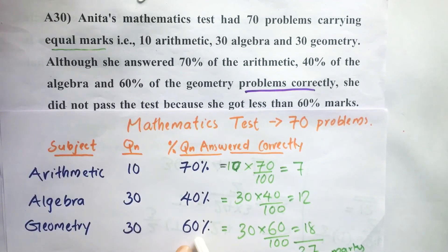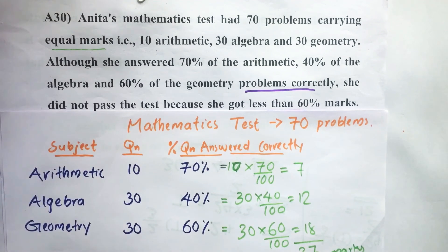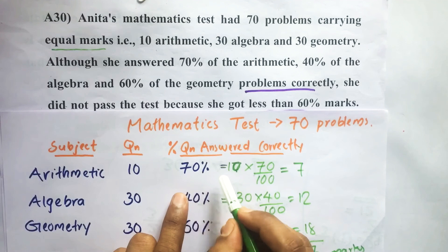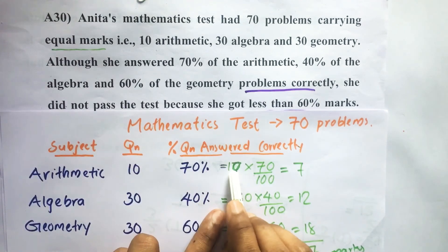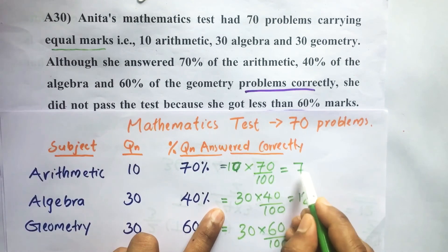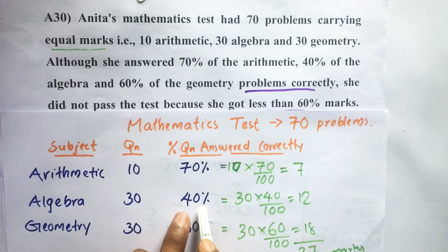and 60% of the geometry questions correctly. So 70% of the 10 arithmetic questions equals 10 × 70 ÷ 100 = 7. Similarly, 40% of